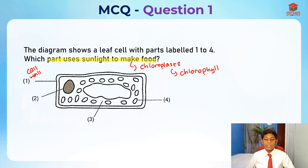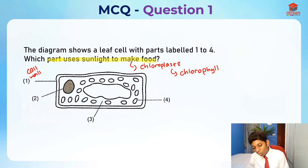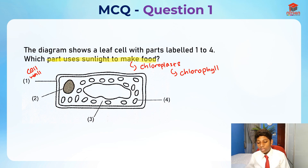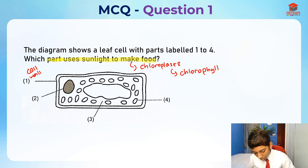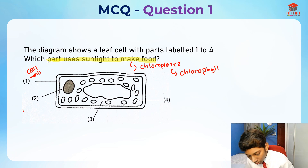For those of you who got it right, good job. Next, what part is this? Let me give you a hint — this is actually the brain of the cell. It controls all the activities that happen in the cell. Yes, you're right — this is the nucleus.